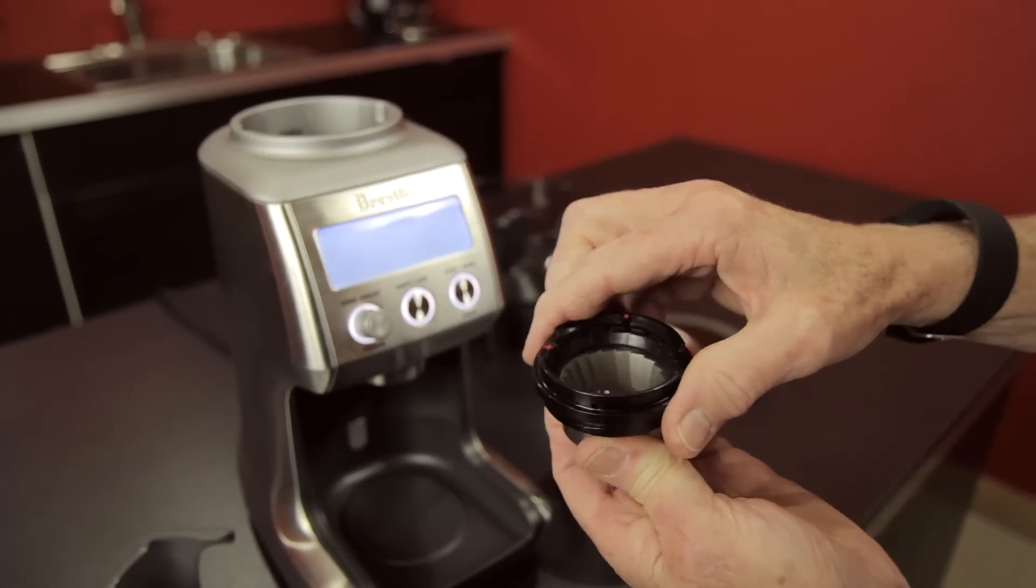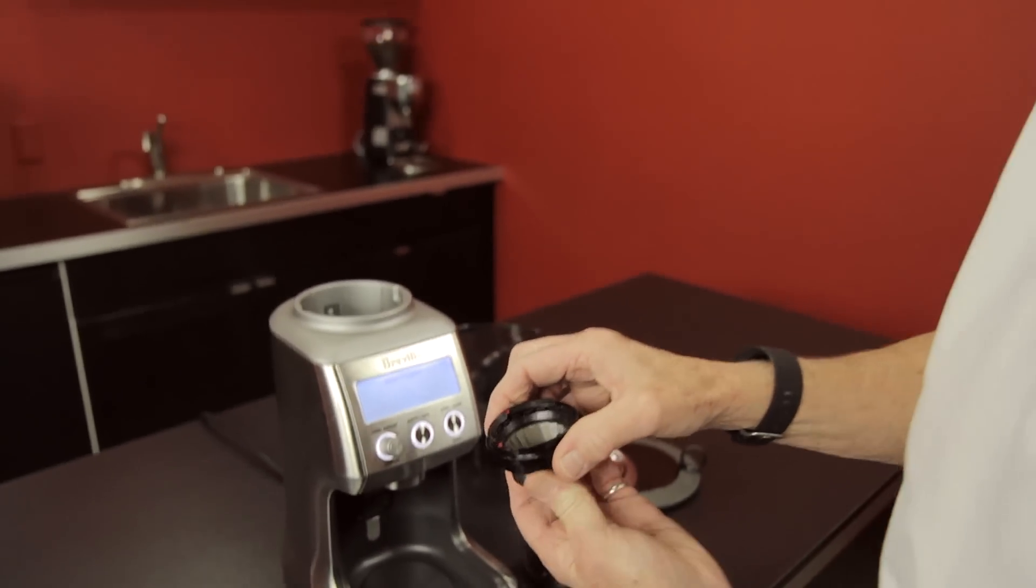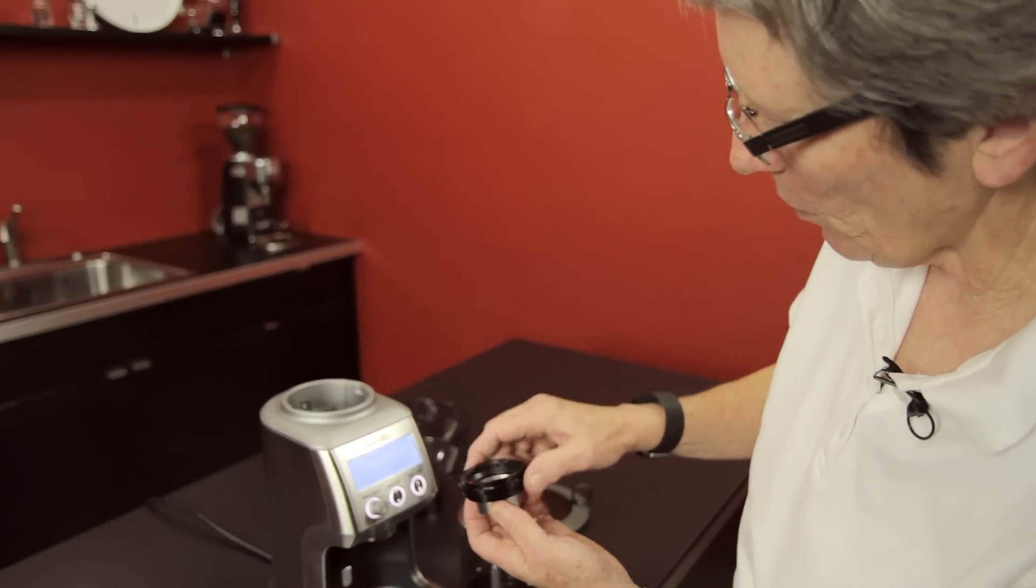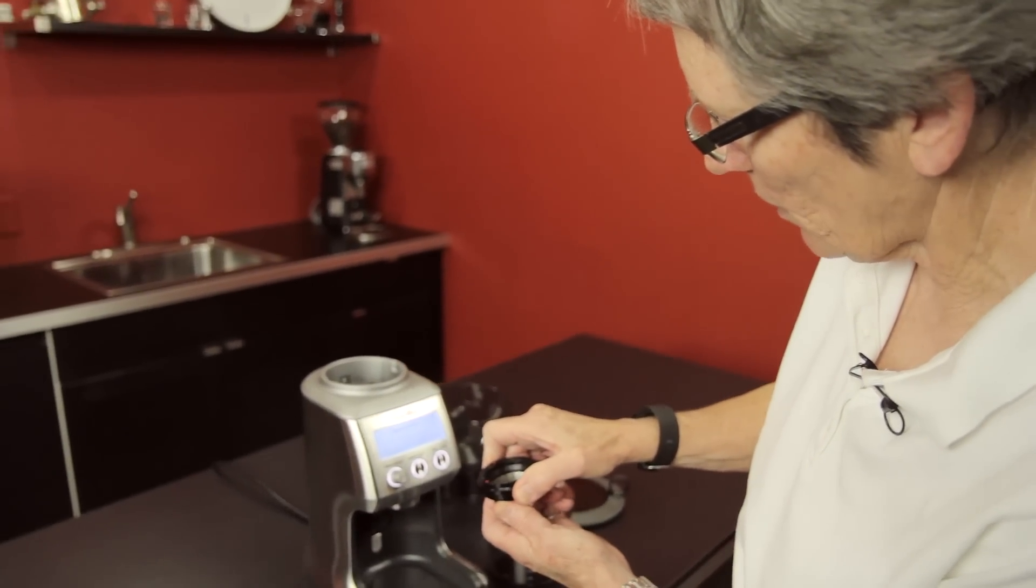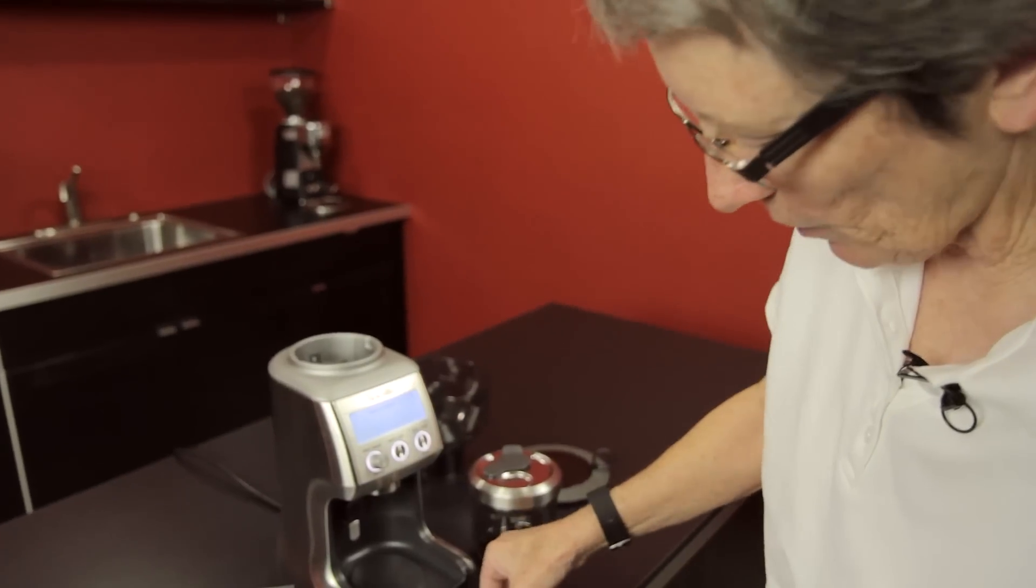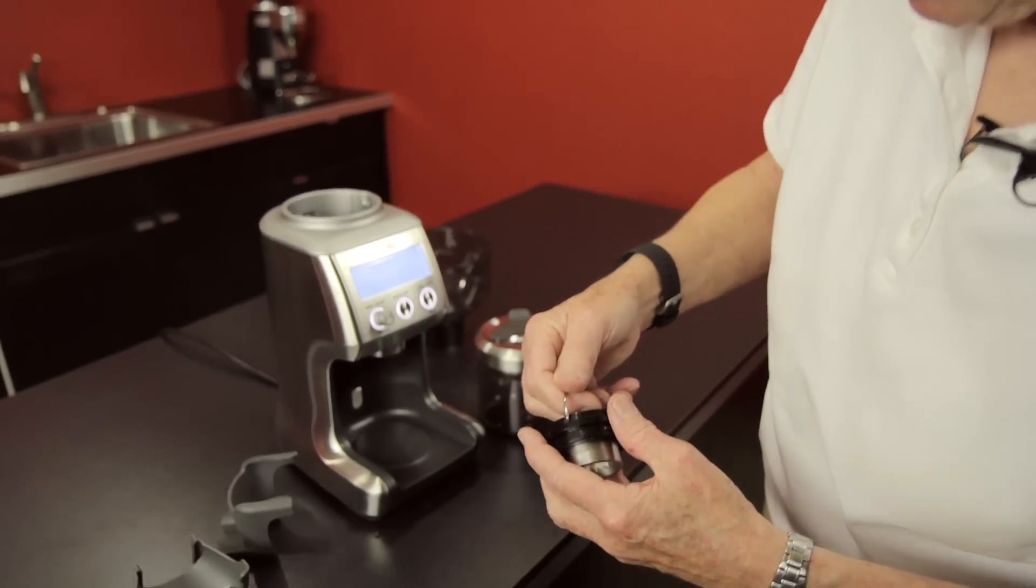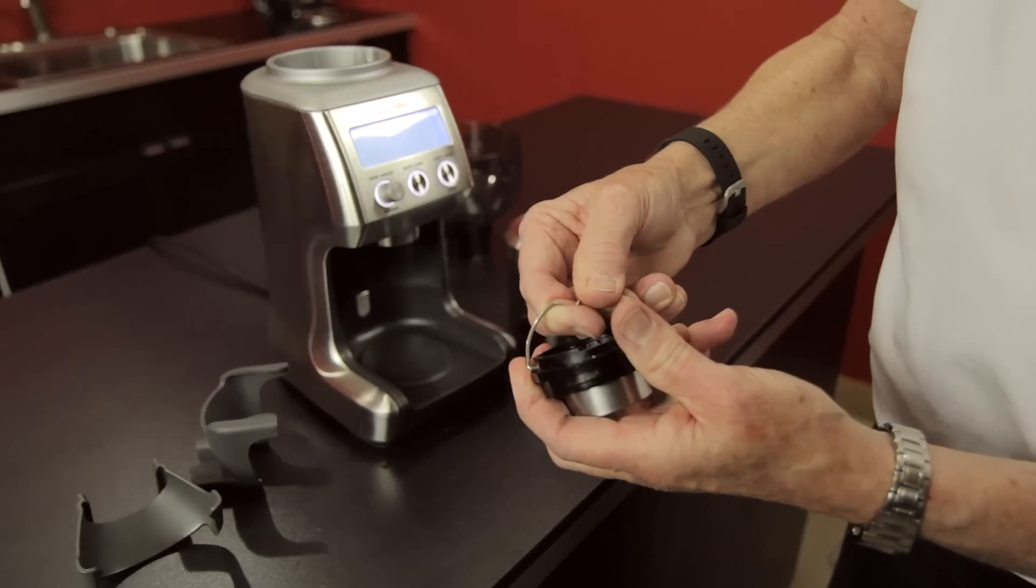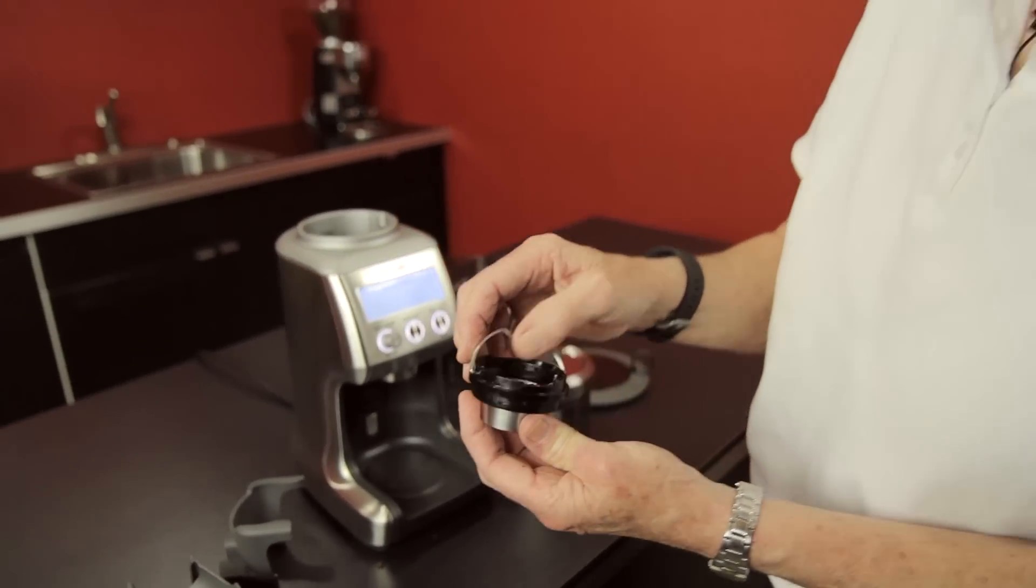And now you can change the burrs ever so slightly, the top burr, how far down it goes, and then what you want to do is line this dot up with whatever hole, whatever size you want it to be, and then you put this back in, and it goes in that hole, goes in the hole in the other side, spring loaded. Now it's locked, so it can't move.